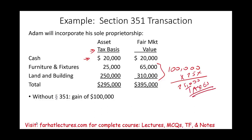This would be the result without Section 351. But since we are assuming this transaction qualifies under Section 351 — Adam is incorporating, taking his assets and giving them to the corporation he owns — Adam will not recognize any gain or loss. Why? Because his economic status has not changed. He still has the cash, the furniture and fixture, and the land and building — they are just now in the corporate account. Therefore, there should be no taxes.